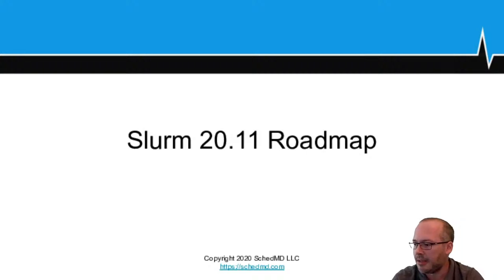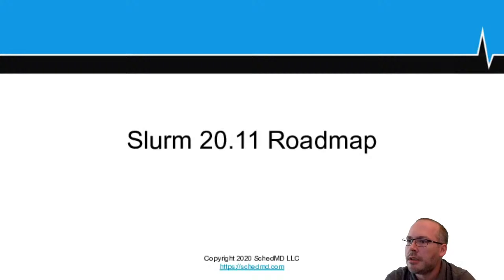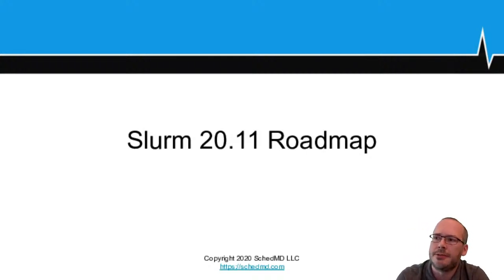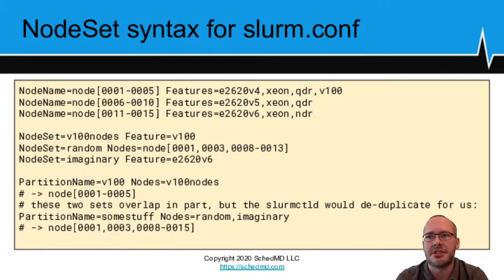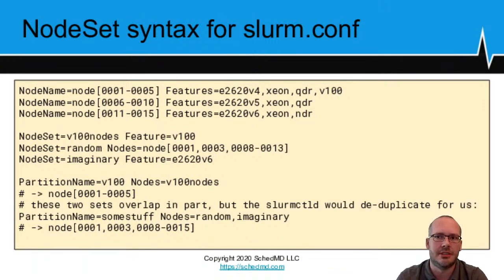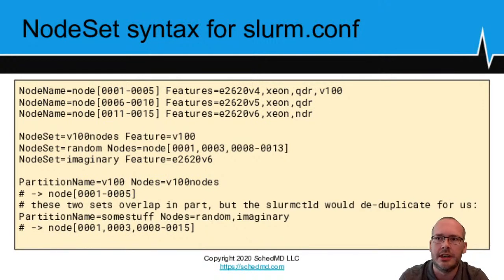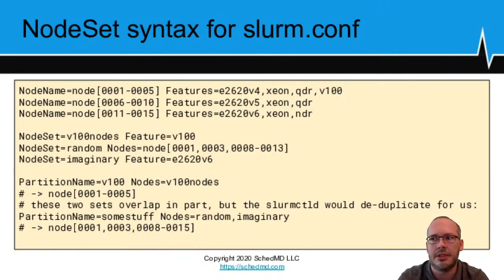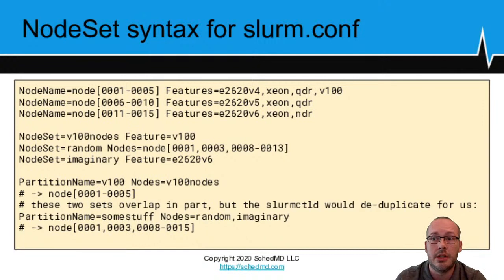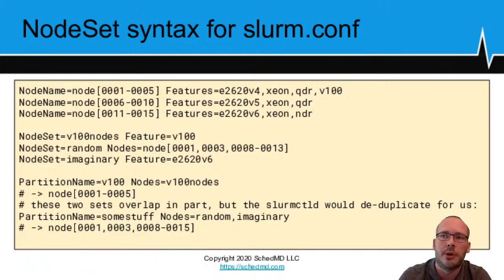That covers the 20.02 roadmap. Taking a brief pause to check questions. On the difference between a node set and a partition: node sets are designed to be used for partition definitions — a shorthand way to refer to a large collection of nodes without copying the full list. On magnetic reservations: can a user avoid them? No, not at this time. If you have turned on a magnetic reservation, a user's jobs are eligible to run in it if they otherwise satisfy the access control constraints.